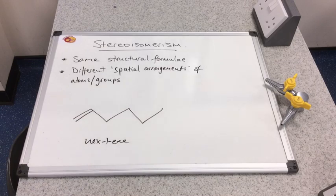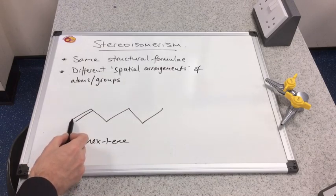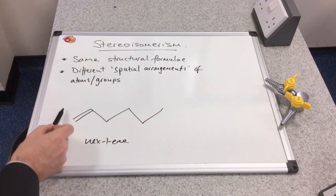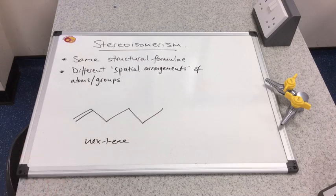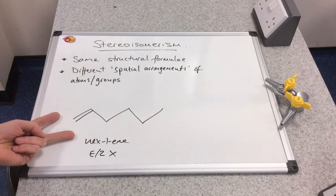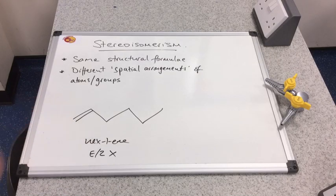Is E/Z isomerism possible? Let's look at the carbons in the double bond. What have we got attached to this carbon? We've got two hydrogens. That's the same atom group. So basically when we swap them round, the molecule is still the same.